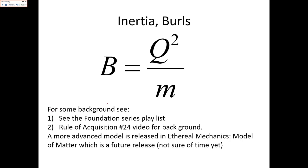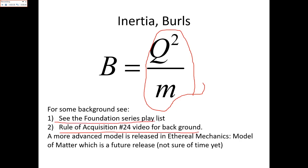For background on why these are the units, Rule of Acquisition 24 goes over this. Basically, matter can be defined as two charges separated by a distance — these are the natural units showing the underlying system. The unit square coulomb per meter is now the unit of inertia, which we're calling the 'burl.' Burl is short for burliness, meaning heaviness, and it can be pluralized as 'burls.' There will be a more advanced release of the model of matter covering magnetic moments, time dilation, and related topics.